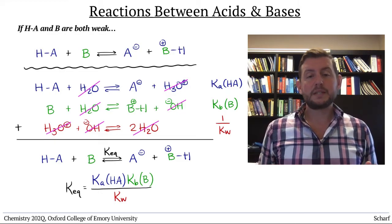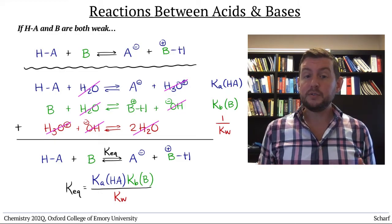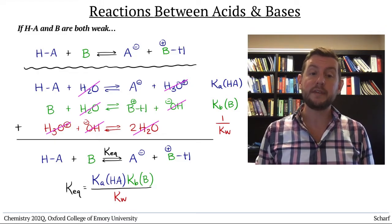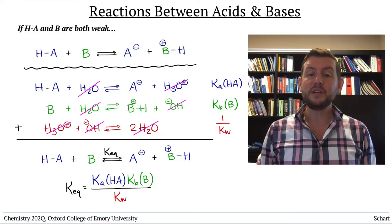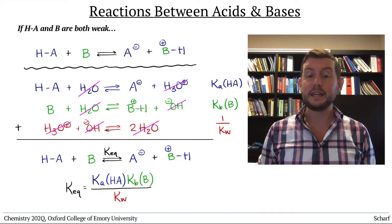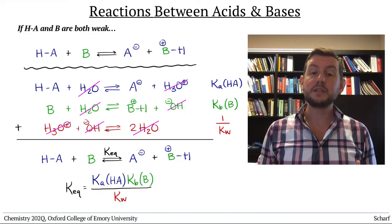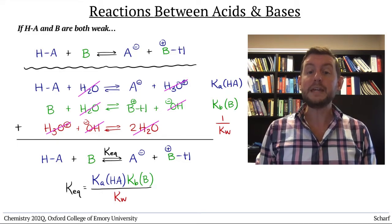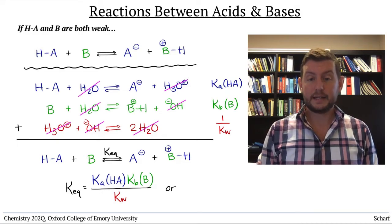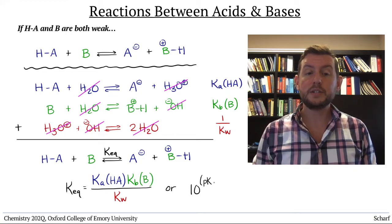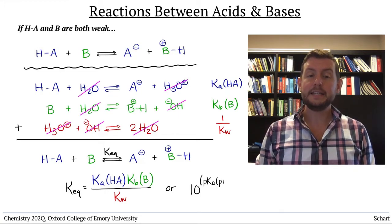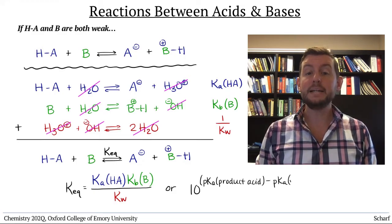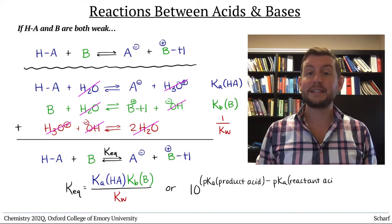Now I've mentioned several times that pKa values are more commonly tabulated than Ka or Kb values. So there's another equation for Keq that allows us to calculate Keq from pKa's. That is, Keq for an acid-base reaction equals 10 to the pKa of the product acid minus the pKa of the reactant acid.